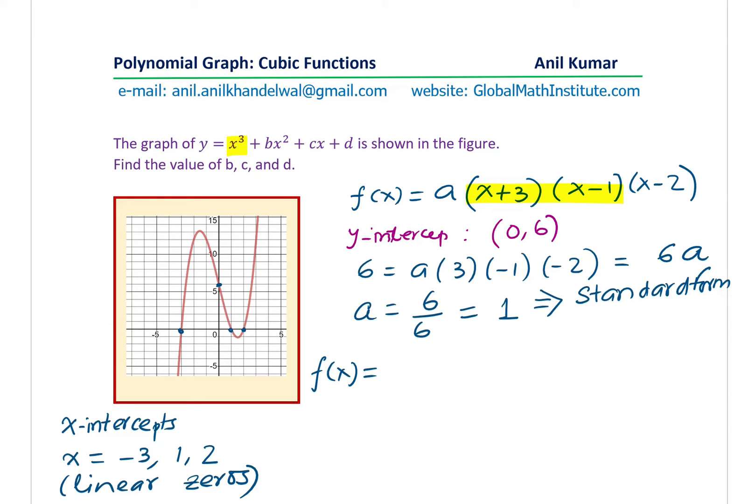So what do we get? We get x squared minus x plus 3x minus 3. We're going to multiply this by x minus 2.